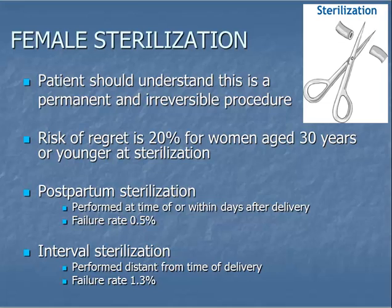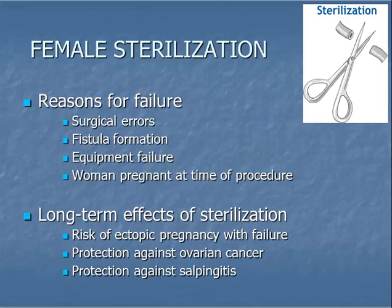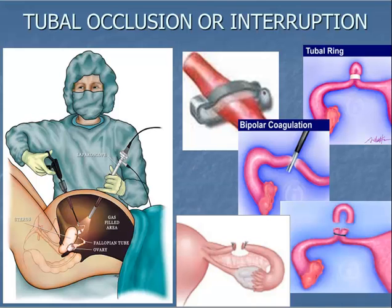Female sterilization, which includes occlusion of the fallopian tubes, can be performed shortly after birth of a child or at a time unassociated with childbirth. Sterilization, like any other contraceptive method, has a risk of failure. Female sterilization failure rates range from 0.5% to 1.3%; reasons for failure are listed here. Illustrated here are different methods of female sterilization with occlusion of the fallopian tubes. These methods are performed in the operating room, often by laparoscopy. Surgical clips, silastic bands, cautery, or excision can be used to interrupt the fallopian tubes and provide sterilization.